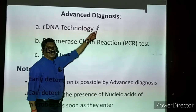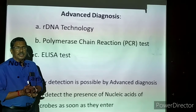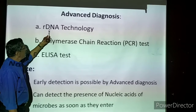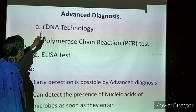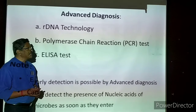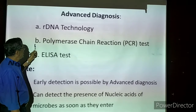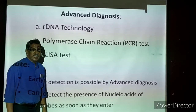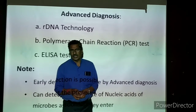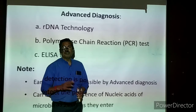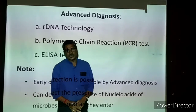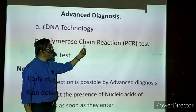Now we come to advanced diagnosis - the second method. DNA technology, meaning recombinant DNA technology, where we go down to the DNA level of the microorganism - bacteria, viruses, or even infectious parasitic fungi. The second advanced method is polymerase chain reaction, called PCR test. This name is very popular because very recently, during the pandemic, PCR tests were used to detect whether a person has coronavirus. The expansion for PCR is Polymerase Chain Reaction test.